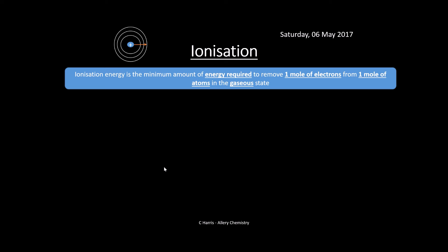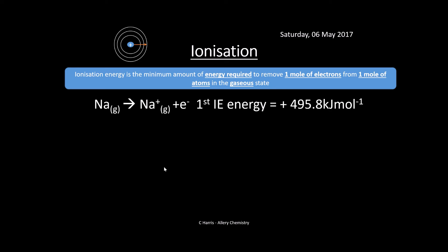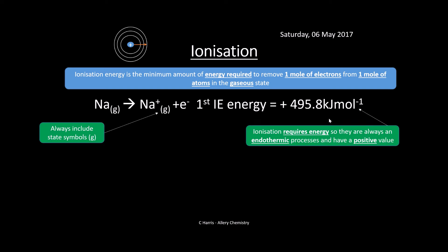Ionization energy is the minimum amount of energy required to remove one mole of electrons from one mole of atoms in the gaseous state. You've got to know those certain keywords. Here's an example: sodium going to Na+ plus an electron. The first ionization energy is +495.8 kJ per mole. Always include your state symbols — that's really important. Ionization requires energy because you are removing an electron from an atom, so you have to put energy in. That's why these values are always positive — they are effectively endothermic processes.